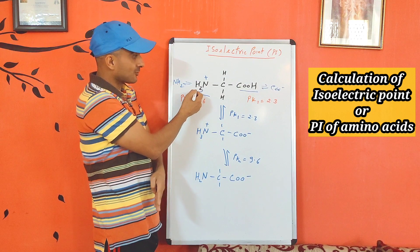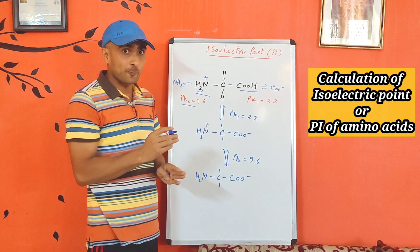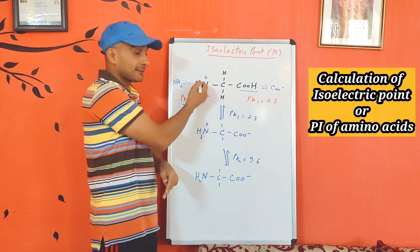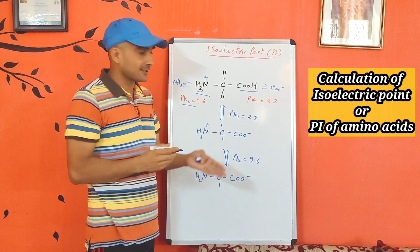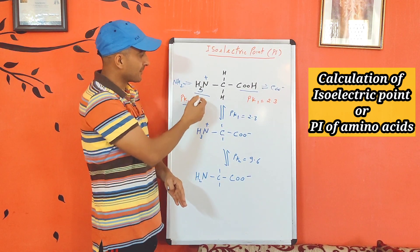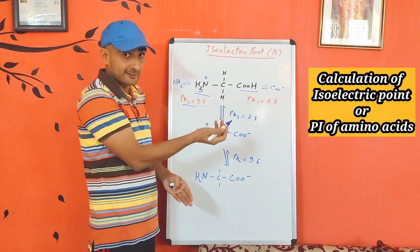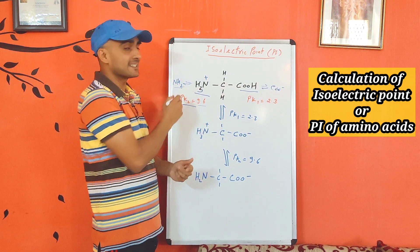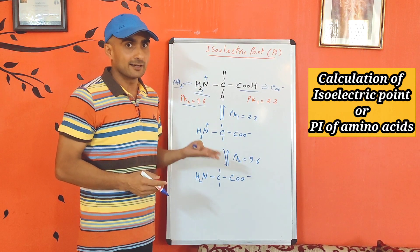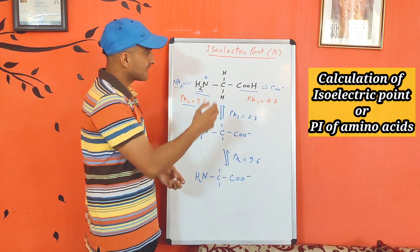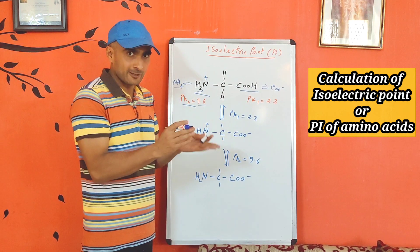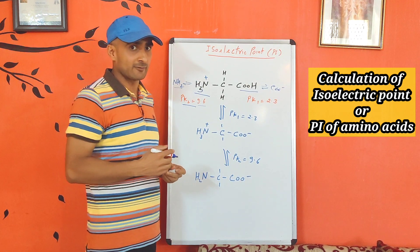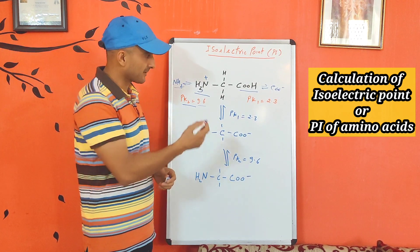Similarly, for the amino group, which is a basic group: at low pH, the group remains protonated, becoming NH3+. When you increase pH to 9.6, 50% is NH2 and 50% is NH3+. When you go further beyond 9.6, the NH2 species concentration keeps increasing. The relative concentration of a group with respect to change in pH can be calculated using the Henderson-Hasselbalch equation, which we will take as an example after this lecture.